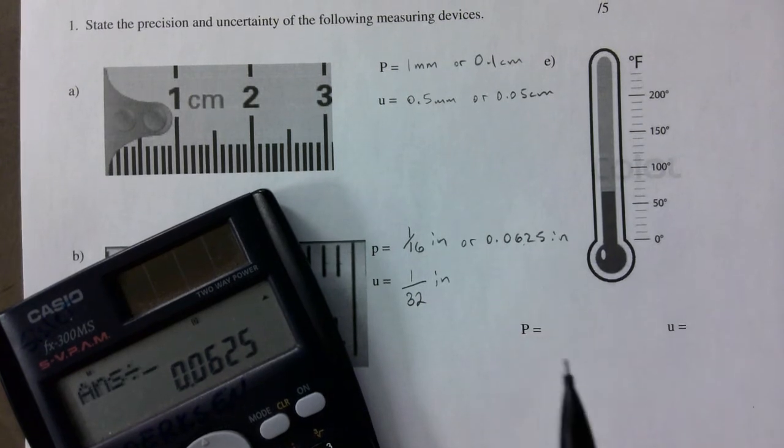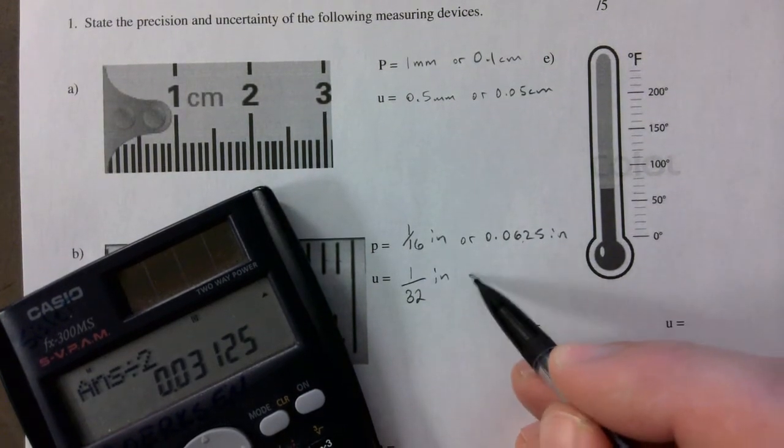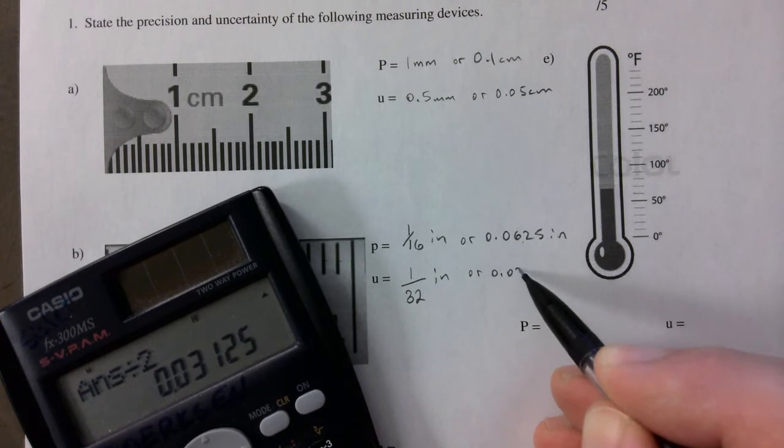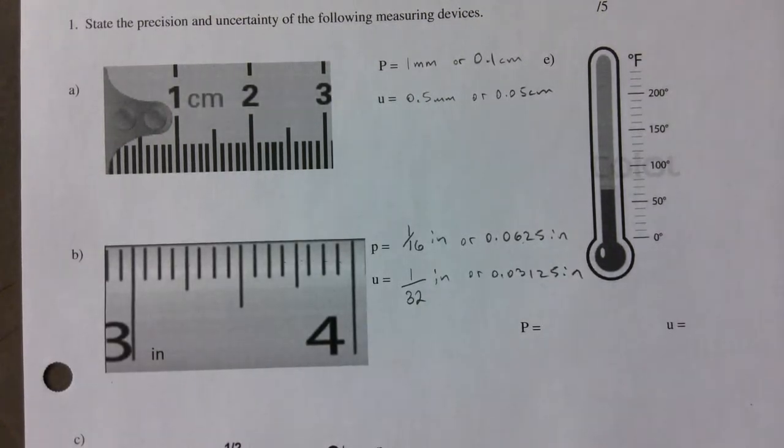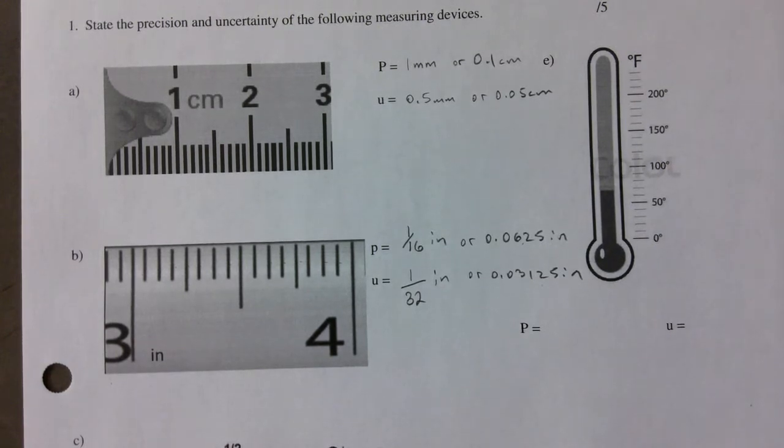Dividing that by 2, 0.03125 of an inch is your uncertainty if you stated that as a decimal.